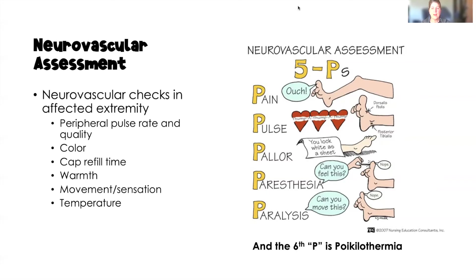I like to add a sixth P: poikilothermia — the inability of the extremity to maintain temperature. When we don't have good blood flow, that extremity is going to get cold. And if we want to add a seventh, it's puffiness — when we have decreased blood flow and decreased oxygen, that extremity will swell or become edematous. It's very important that you can perform a neurovascular assessment and understand all of its components.